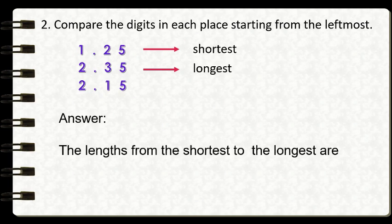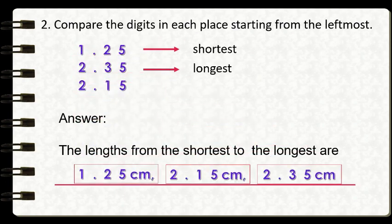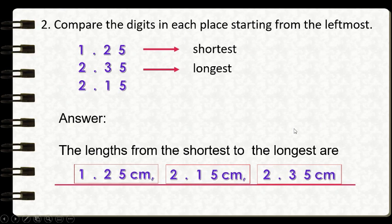If we are going to arrange these lengths from the shortest to the longest, this will be our answer. The shortest length is the 1 and 25 hundredths centimeters ribbon. Second is the 2 and 15 hundredths centimeters ribbon. And the longest ribbon has the length of 2 and 35 hundredths centimeters.